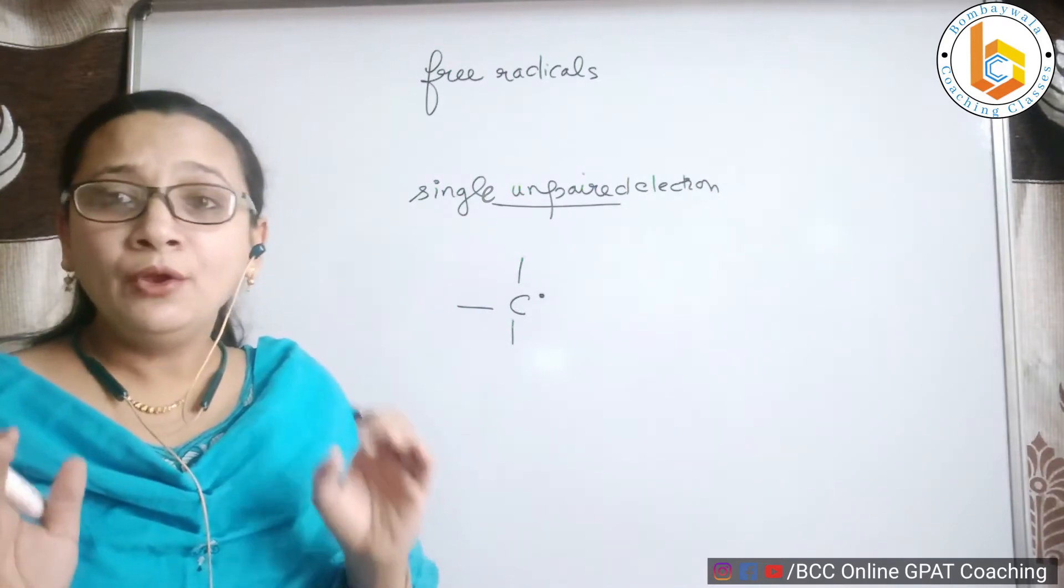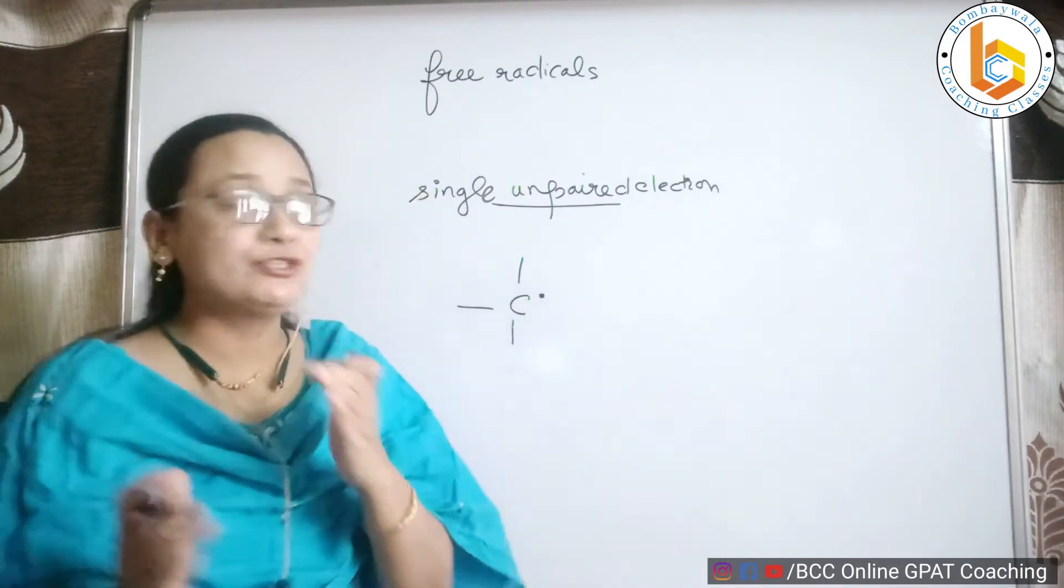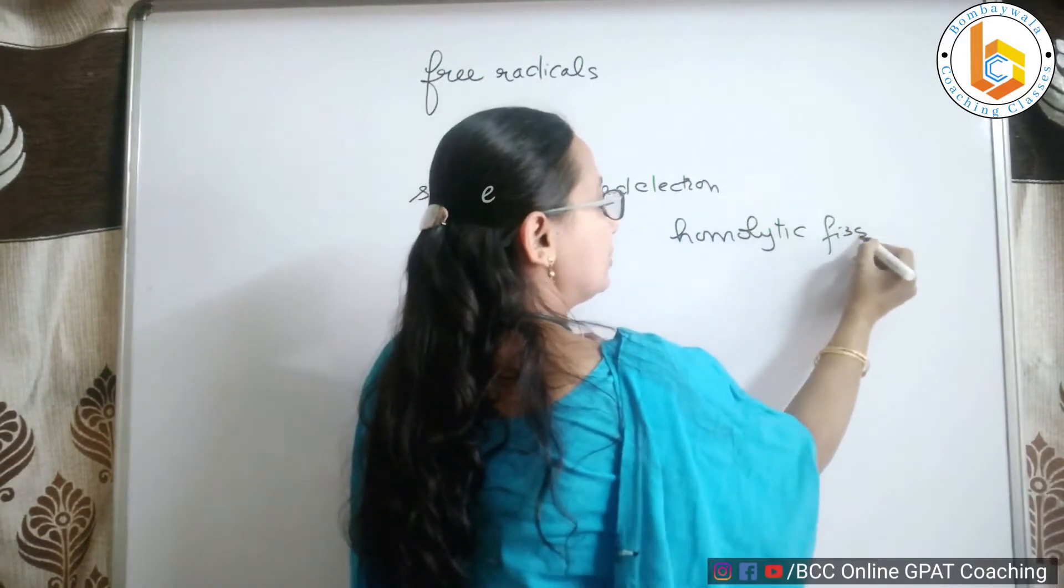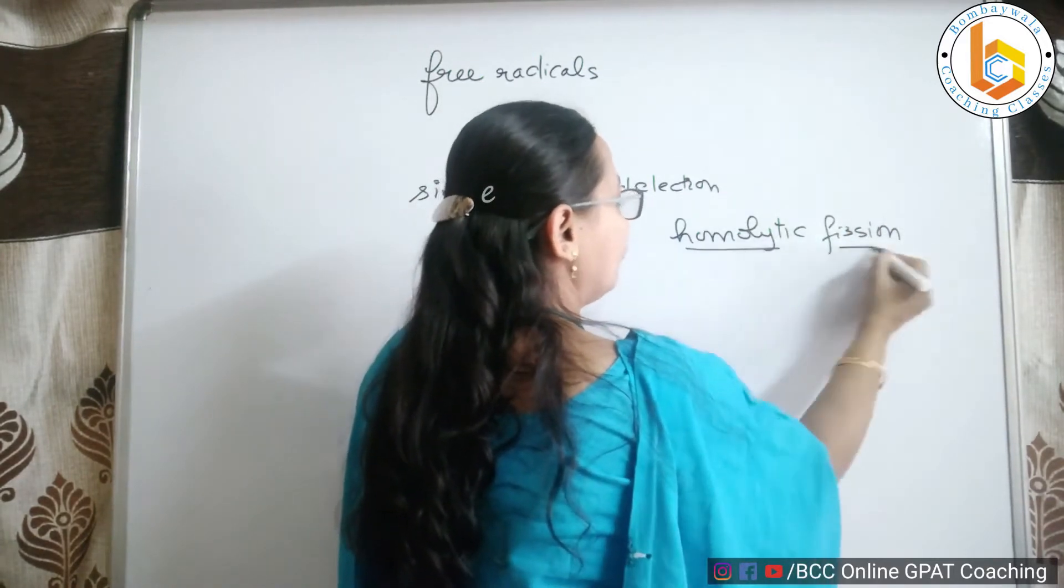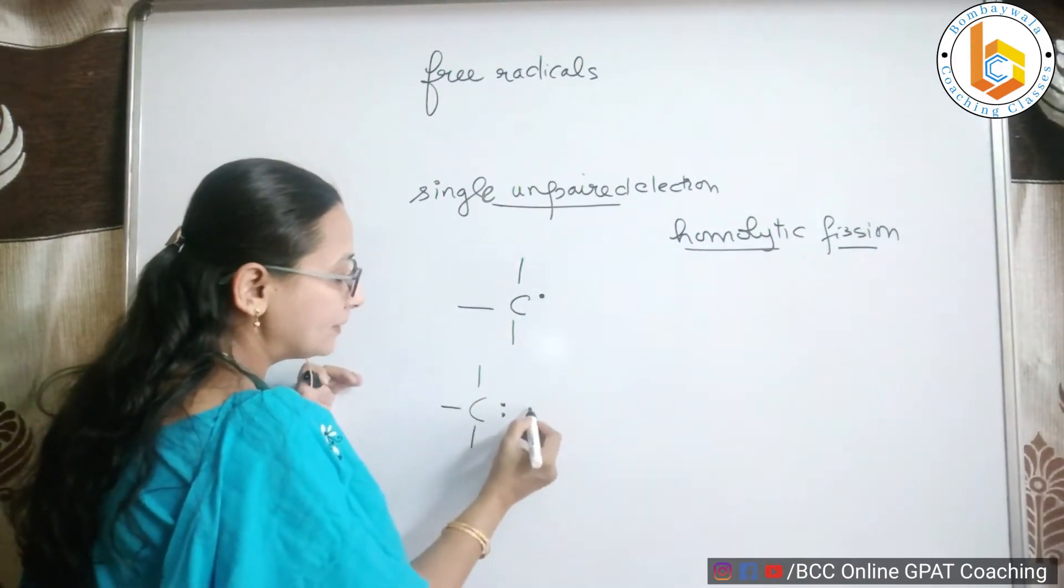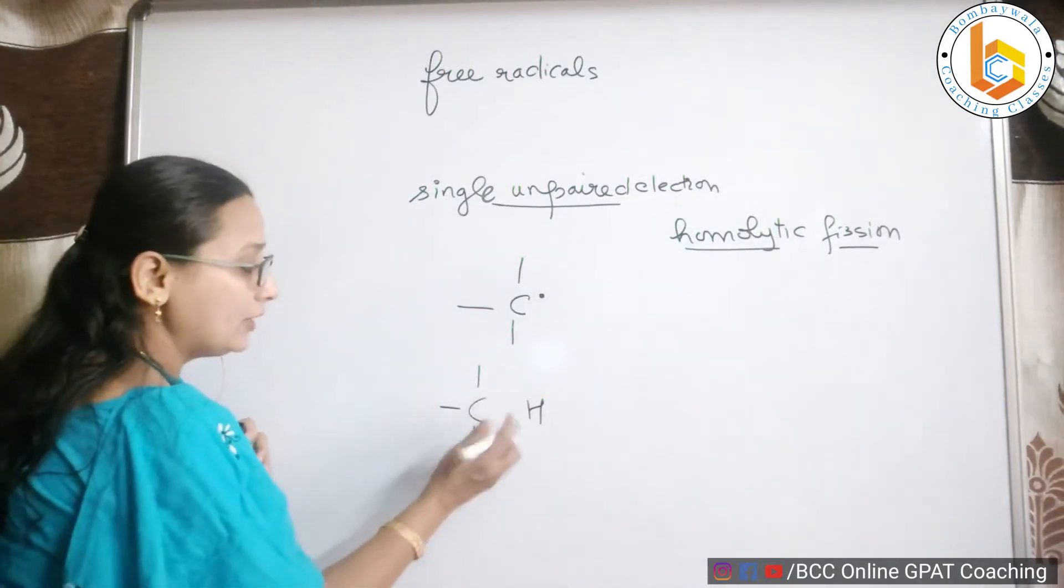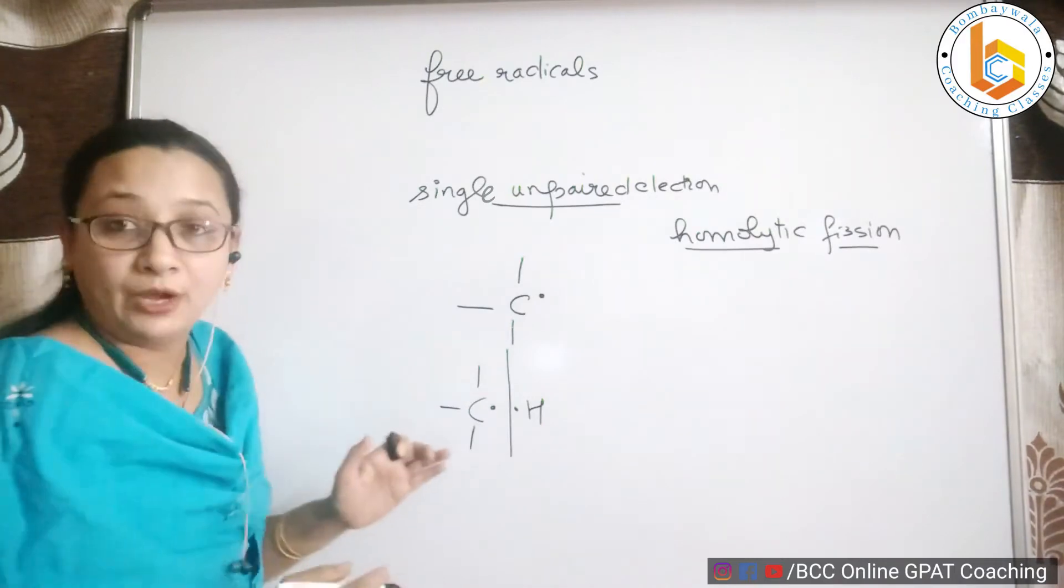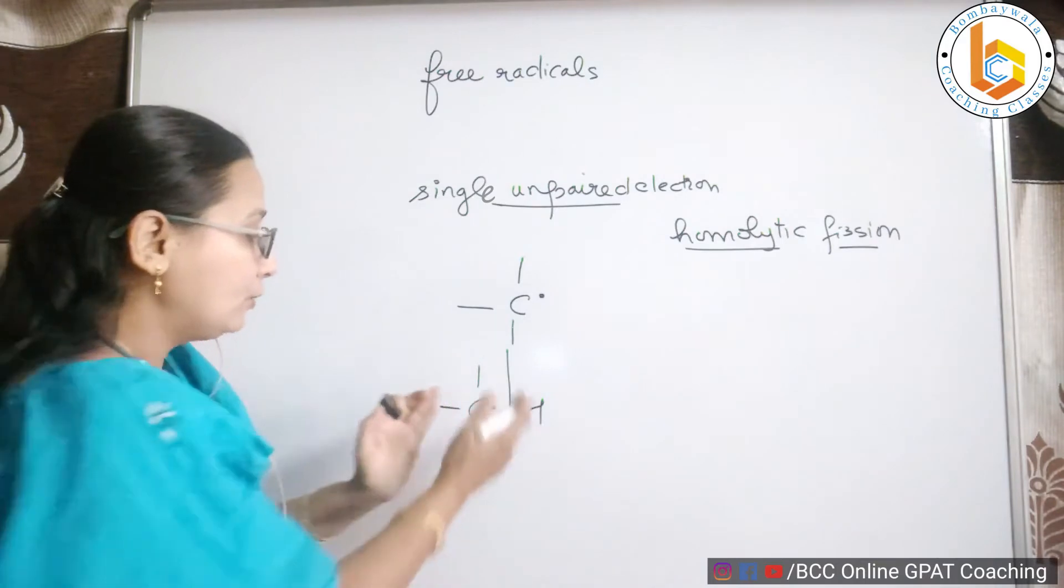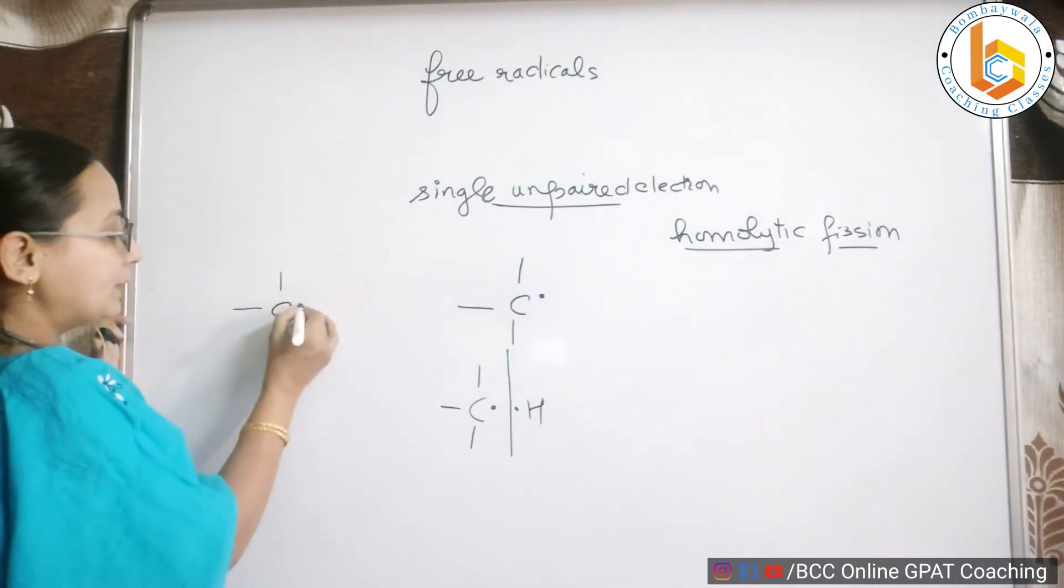And most of the time free radicals are formed because of homolytic fission. Please see my video on homolytic fission so that this concept is very clear to all of you. See for example, this is my C and this is attached to another, say for example H, or say X. If the fission is going like this, it is homolytic - the breaking down is same, homo is same on both the sides, equal. One electron goes to H and one electron goes to carbon. So this is nothing but formation of a free radical.